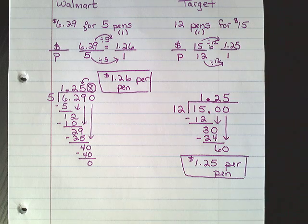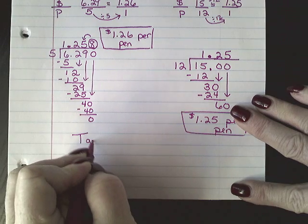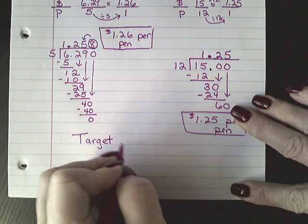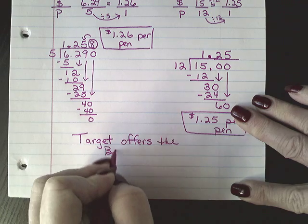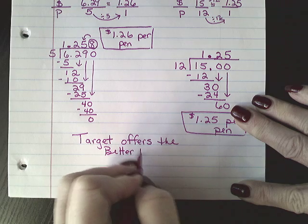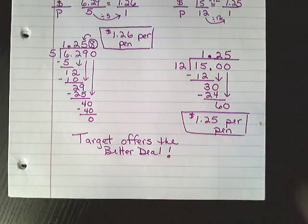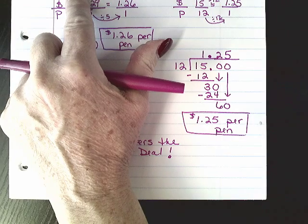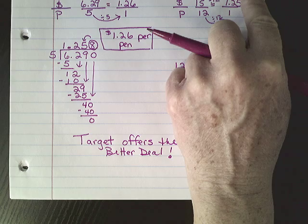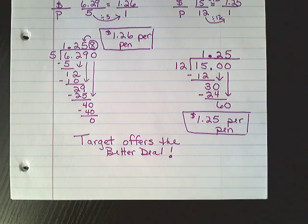So which one is the better deal — which one is the cheaper price? Target offers the better deal. You probably looked at these numbers in the very beginning and thought it's cheaper at Walmart because it was only $6.29 and the other was $15. But that's not how it works. You need to find the unit rate first. Just because the total price is lower doesn't make a difference — you need to find that unit cost first.